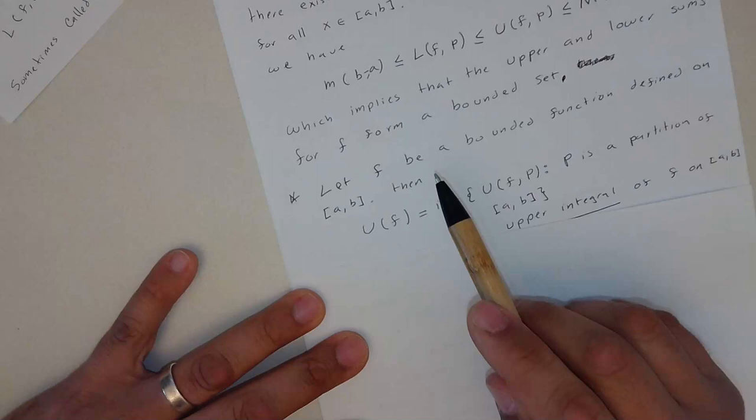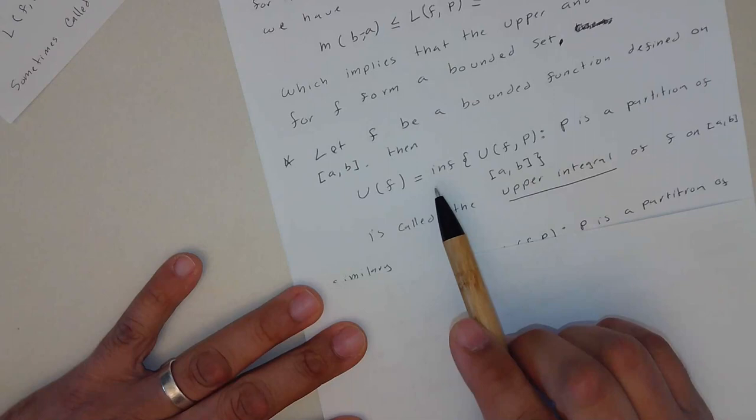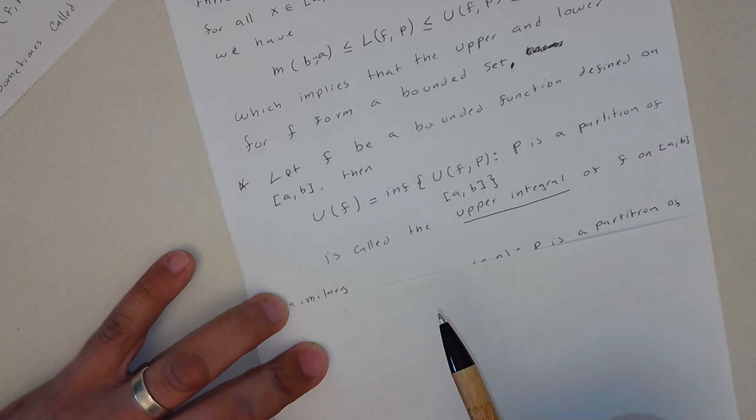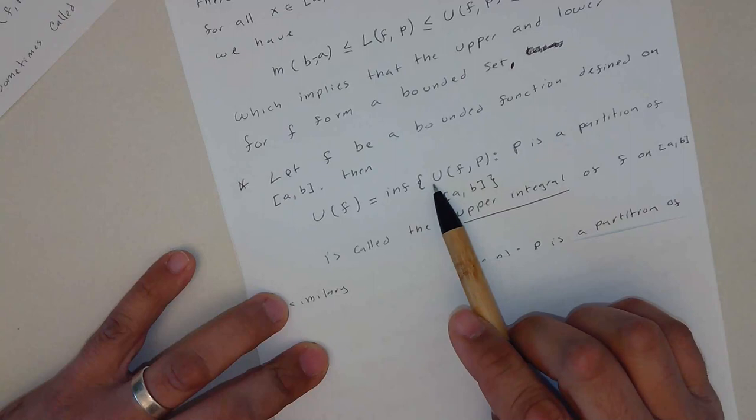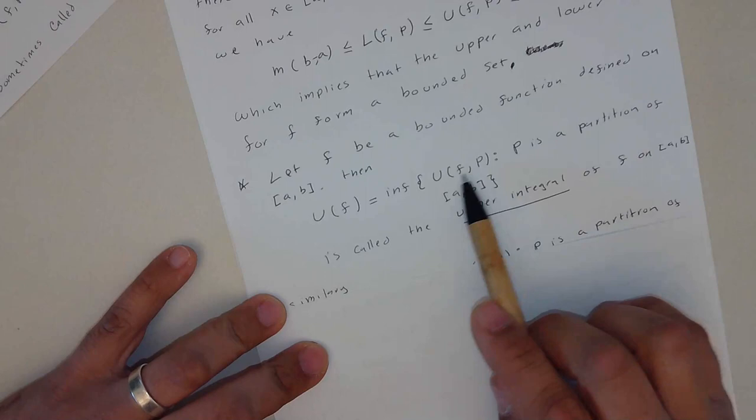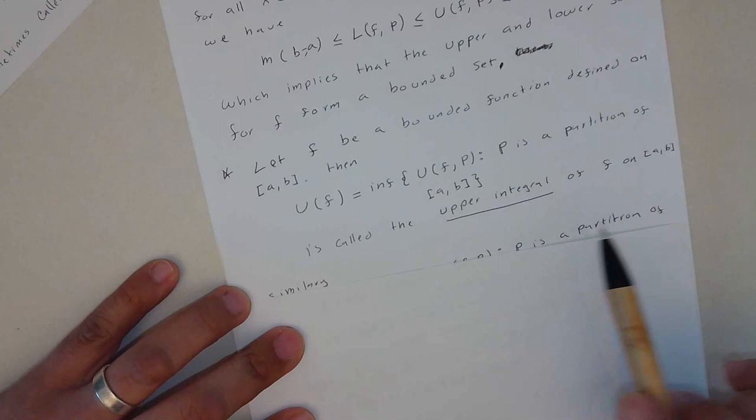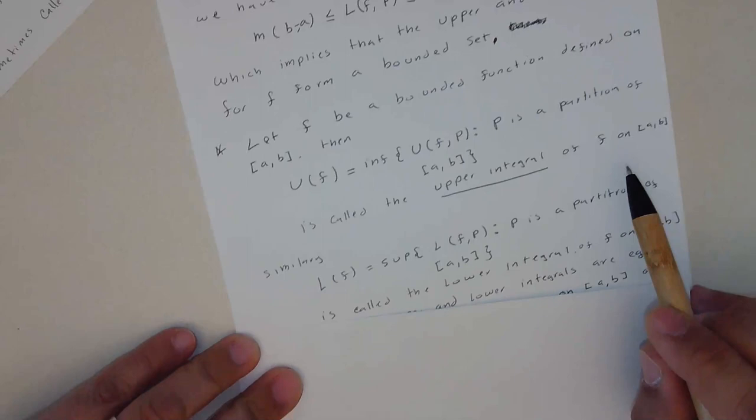So now let's continue. Let F be a bounded function defined on [a,b]. We said that before. U(f) in this case will be the infimum of the upper sum of any partition P in between a and b. So I'm taking a partition, wherever the upper, I mean, and get all the upper sums, and then we will get the infimum number, the smallest number of all the possible sums that we can get there. This is called the upper integral of F on [a,b].